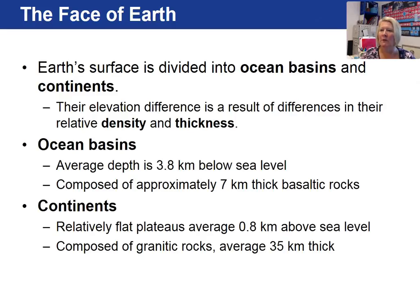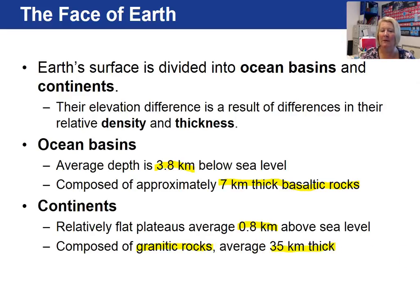Our major features are the oceans and the continents. The elevation varies for ocean basins and continents, as well as their densities and thicknesses. Overall, ocean basins average a depth of 3.8 kilometers, and the thickness of the basaltic rocks making up the ocean basins are approximately seven kilometers thick. Continents average 0.8 kilometers above sea level, composed of granodiorite or granitic type rocks averaging 35 kilometers in thickness.